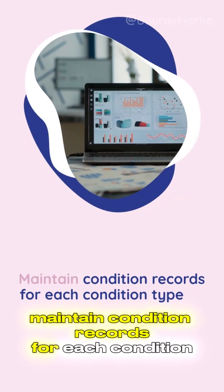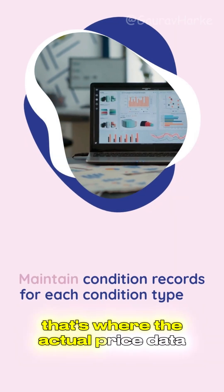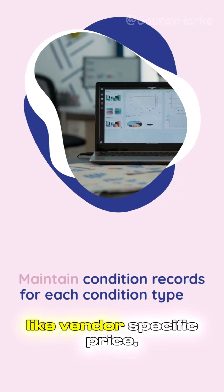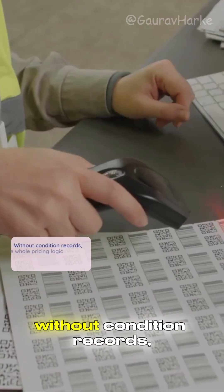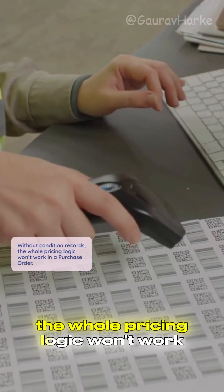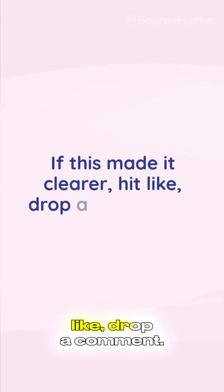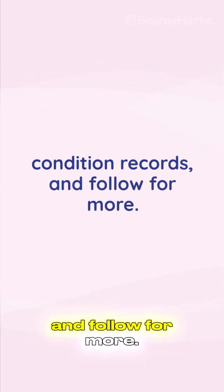Maintain condition records for each condition type. That is where the actual price data comes from, like vendor-specific price, discount percent, etc. Without condition records, the whole pricing logic won't work in a purchase order. If this made it clearer, hit like, drop a comment if you've battled with condition records, and follow for more.